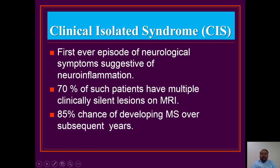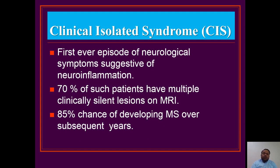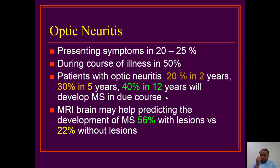Clinically isolated syndrome (CIS) is a first-ever event of central nervous system demyelination compatible with the diagnosis of multiple sclerosis. In MS there should be at least two attacks; if the patient presents with the first-ever attack, they are labeled as CIS. There is an 85% chance of developing MS in a patient who presents with CIS. Optic neuritis is the second most common presentation in MS — patients present with sudden loss or dimness of vision. In adults it is usually unilateral, but in the pediatric population it is bilateral.